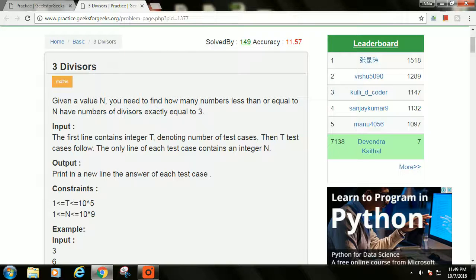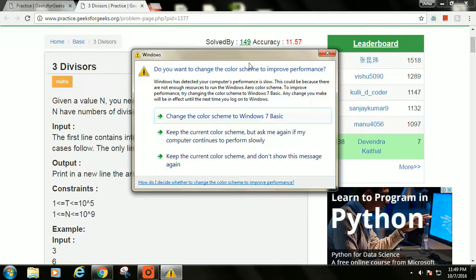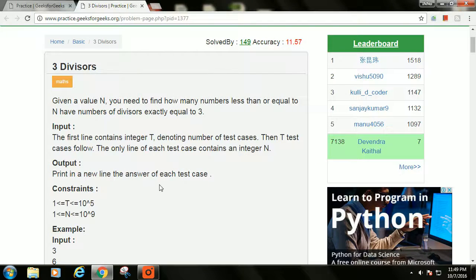We need to find a number less than n such that the number is a square of a prime. In this way, that prime number will divide that number x, x will divide x, and 1 will divide x, so we will have exactly 3 divisors.